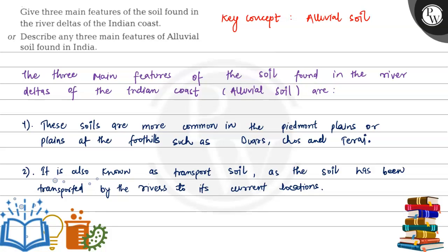Hello, let's see this question. This question says: give three main features of soil found in the river deltas of India, or describe any three main features of the alluvial soil found in India. We have been asked about the characteristics and three main features of alluvial soil. So, the key concept of the question is alluvial soil.